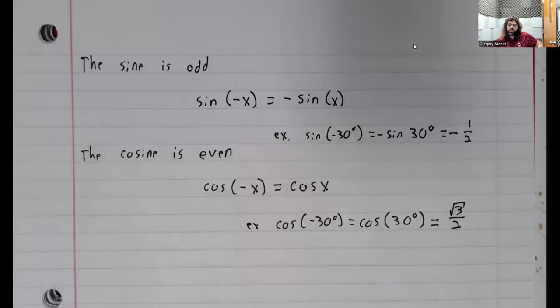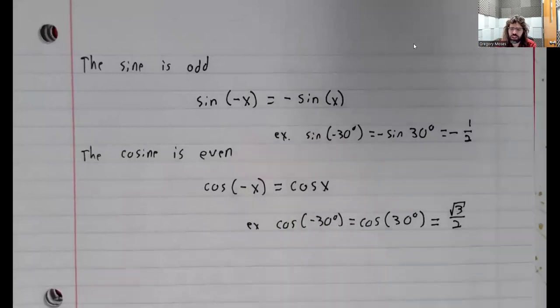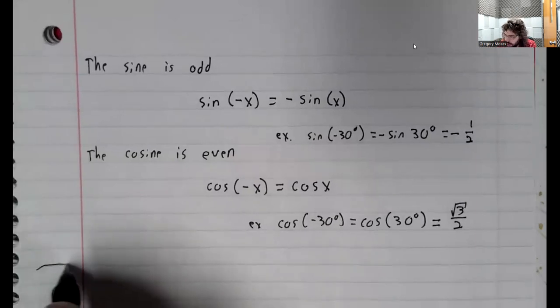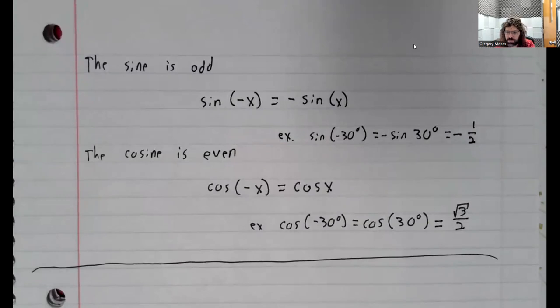All six of the trig functions have properties like this. The sine and the cosine are the only ones that I think are worth committing to memory. I just either look the others up or think them through if I needed to remember which of the other trig functions are even and which of them are odd.